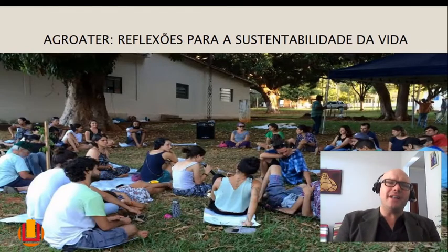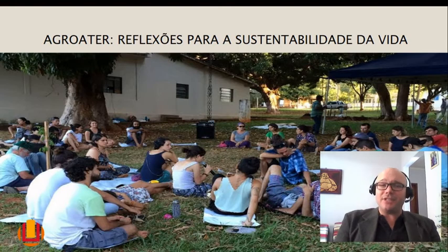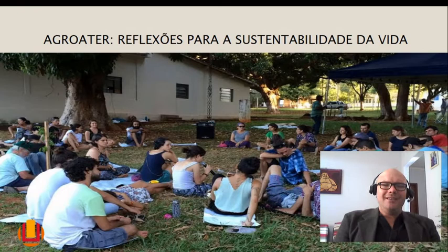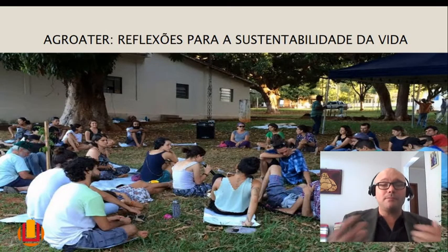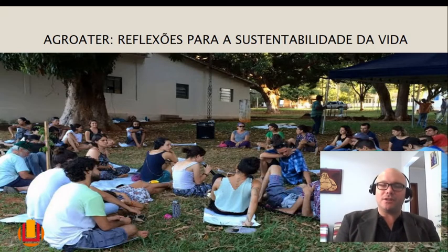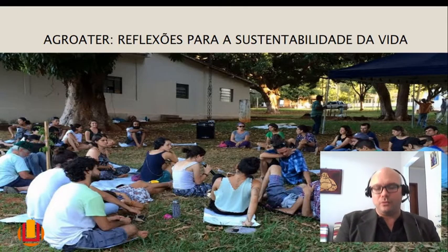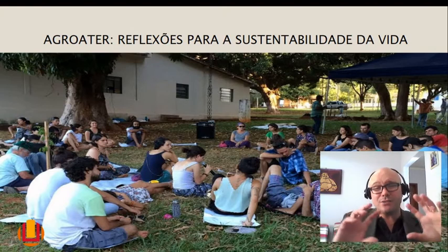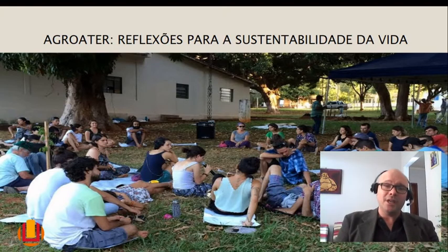Isso vem de várias conversas que partem da sustentabilidade da vida — chamamos de agroater, agroextensão rural. E aí vem uma série de outros elementos filosóficos, como o nosso papel no planeta, o que precisamos fazer para melhorar nossa sustentabilidade, quais são nossas relações com o meio e com o outro, o que é o ego, a vaidade, a presunção, a pretensão, quais são os caminhos para conversar com o agricultor sem que ele se sinta invadido na sua cultura.